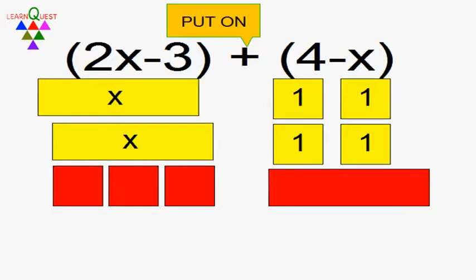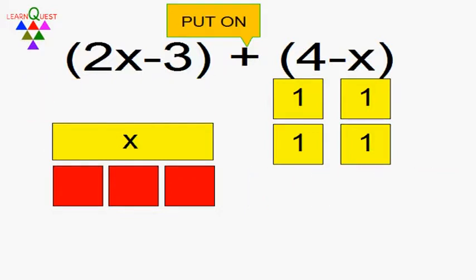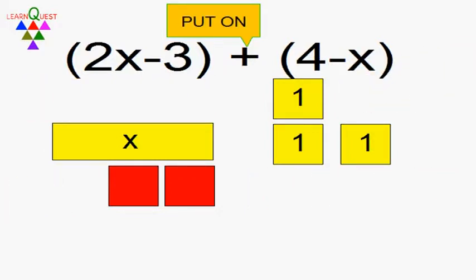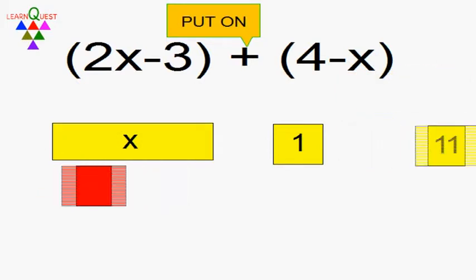Now I have to remove all the zero pairs before I get the answer. There is one zero pair with the x, and there are three zero pairs for the 1s. What remains is x plus 1, and that's the answer.